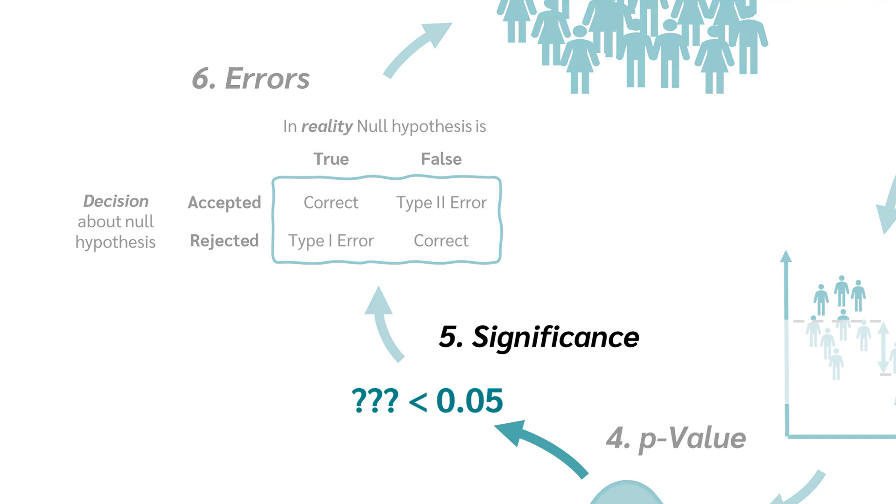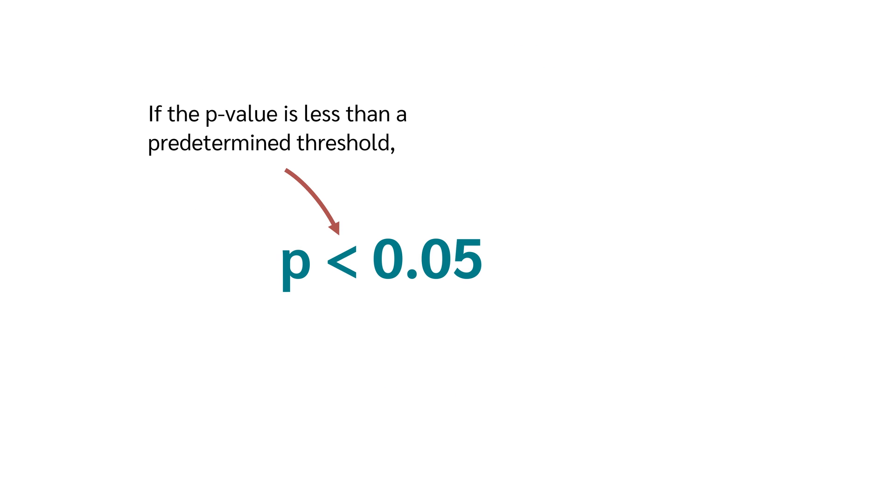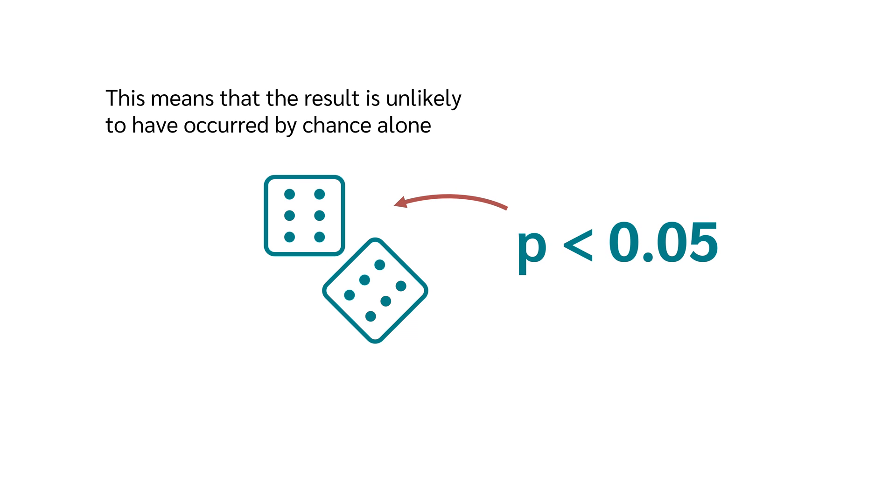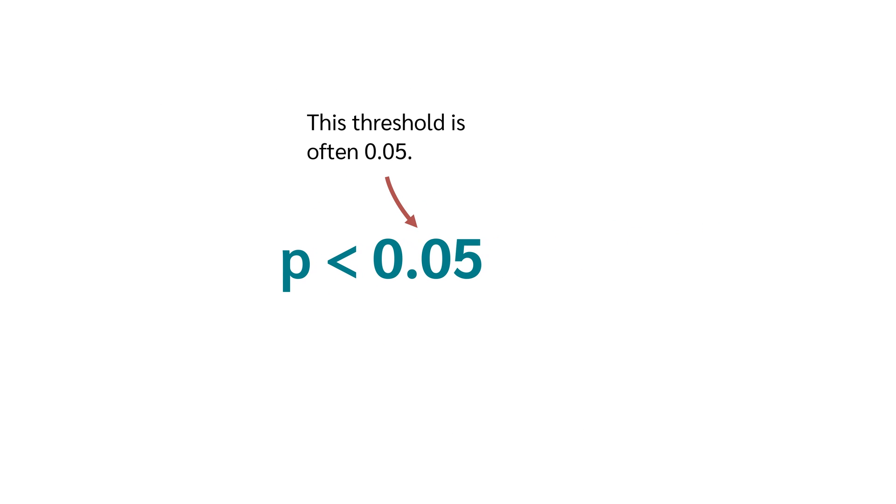This brings us to the next point, statistical significance. If the p-value is less than a predetermined threshold, the result is considered statistically significant. This means that the result is unlikely to have occurred by chance alone and that we have enough evidence to reject the null hypothesis. This threshold is often 0.05.